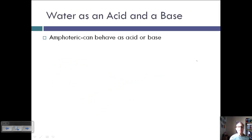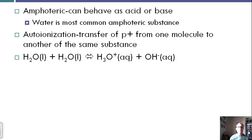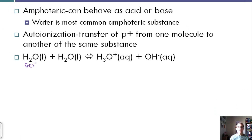Water can be amphoteric, meaning it can behave as both an acid and a base — it's the most common amphoteric substance. Auto-ionization is the transfer of a proton from one molecule to another of the same substance, which is why water is amphoteric. One water molecule acts as an acid (donating a proton to become OH−) while another acts as a base (accepting the proton to become H3O+).